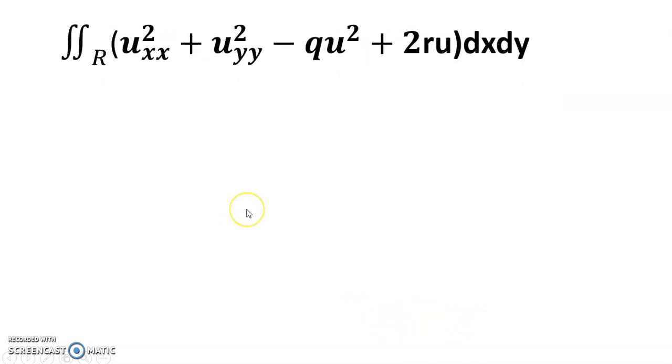Double integral over R of (u²x + u²y - qu² + 2ru) dx dy. This method is called the Rayleigh-Ritz method.